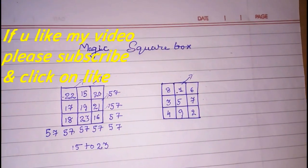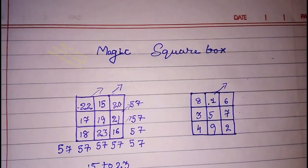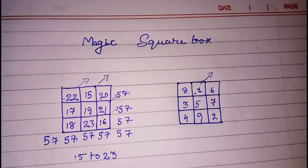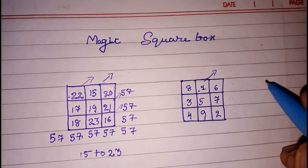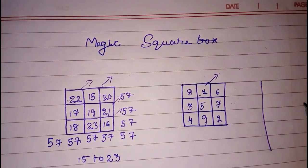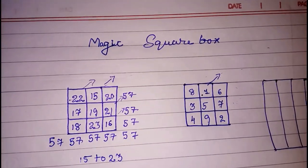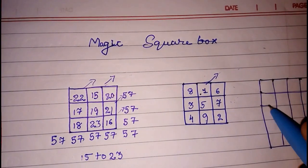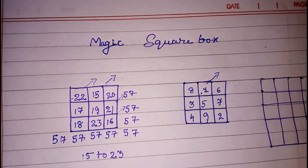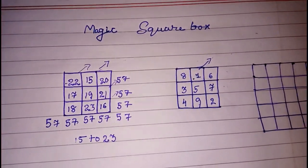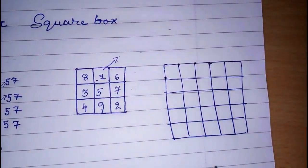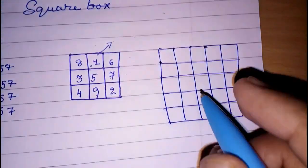You can use this method for any odd boxes, means 3 boxes, if I am going to take here, 5 boxes like this, then also you have to use same method, same way. So here, again look here, look here, look here, I am going to do it right now, we start with 1, 2, 25 numbers.